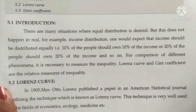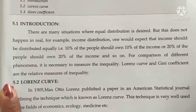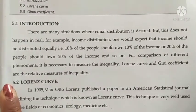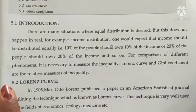So if 10% of the people get a share, they should ideally own 10% of the income, and if 20% get a share, they should own 20%. That is, whatever proportion of people, they should hold that same proportion of income.